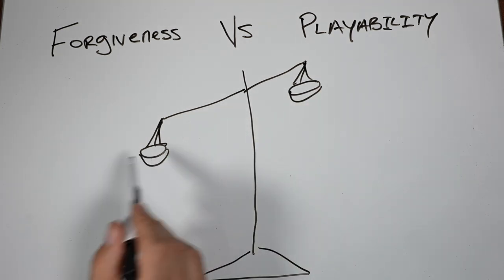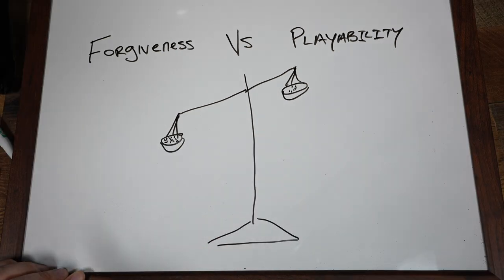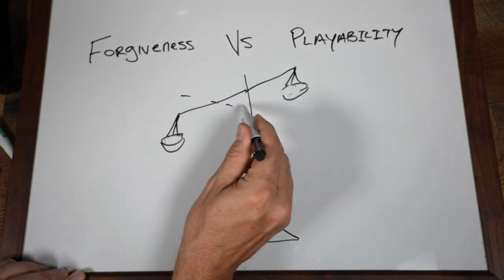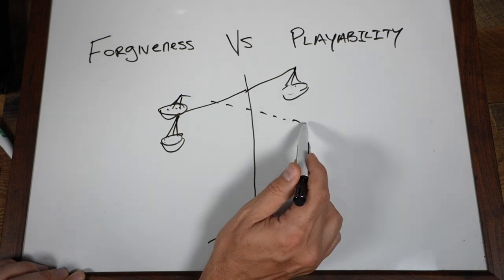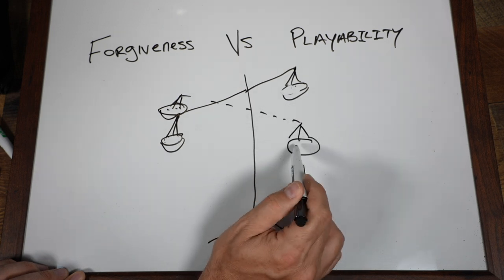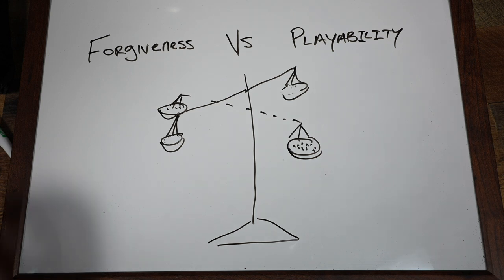You can either have a whole lot of forgiveness and a little bit of playability, or that scale can tip the other way. You've got just a little bit of forgiveness but a whole lot of playability. There is not the perfect club that has both. They're all somewhere in the middle. Now what is forgiveness and playability using this definition? Let me explain.